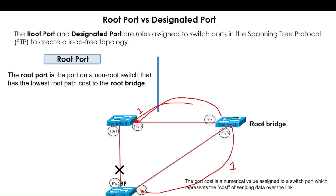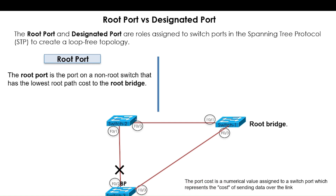From this switch to the root bridge we have a cost of 1, but if we go from another path it will have greater distance or greater cost. So we will not select that path, but we will select the port which is nearest to the root bridge — that particular port will be the root port. This port will be the root port, and in the same way this port on the other switch will also be the root port.